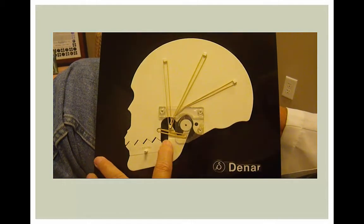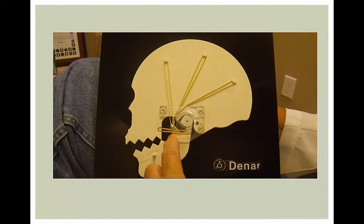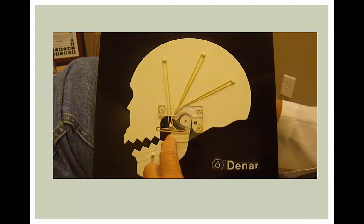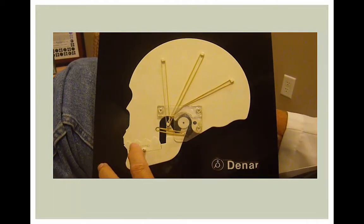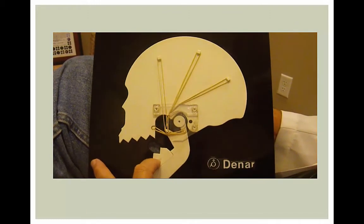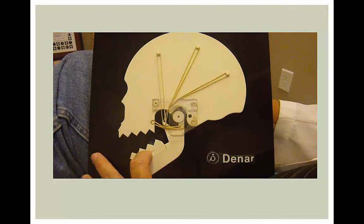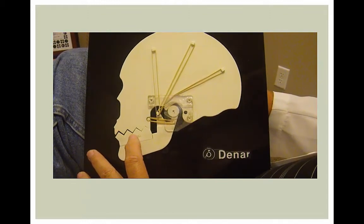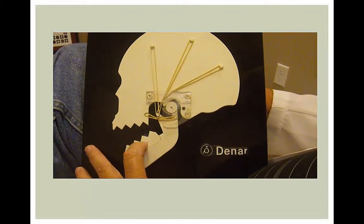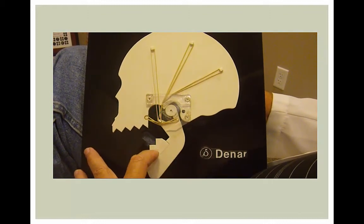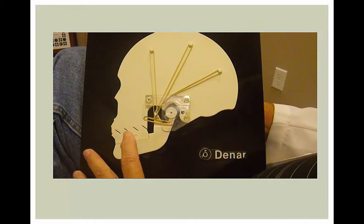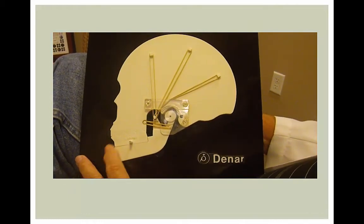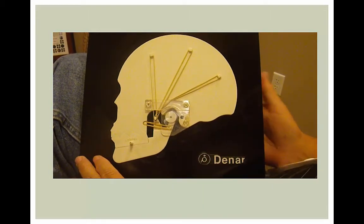This is an anteriorly displaced disc, where the disc is forward and displaced — and this is what true dysfunction is all about. As you open and close, the disc should be between the condyle and upper skull. There is the anteriorly displaced disc when your teeth are together, and as you open, it's supposed to pop into place. Here's a closed lock where the disc is anteriorly displaced and never gets into place. Now it's back into proper position. That's what the movements look like in the Temporal Mandibular Joint.